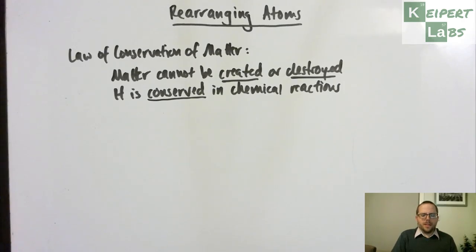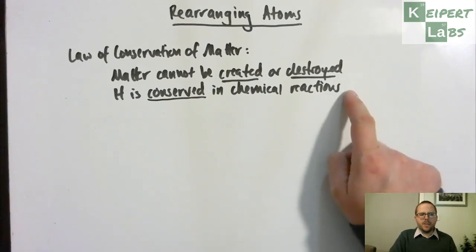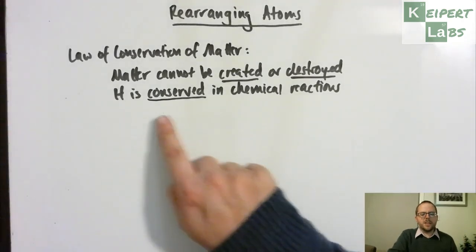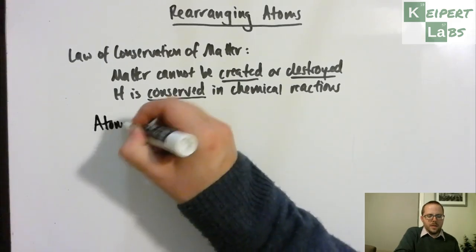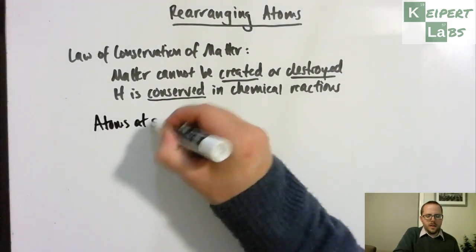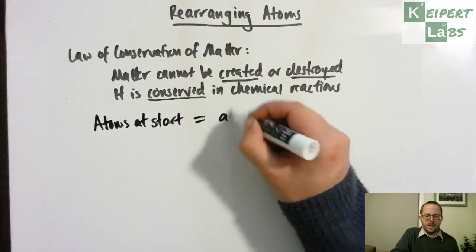The idea being that when we're thinking about chemical reactions and chemical change, matter is conserved in chemical reactions. So when we have a chemical reaction that happens, the matter that was there at the start is there at the end.